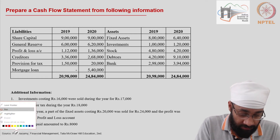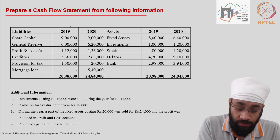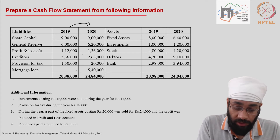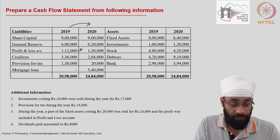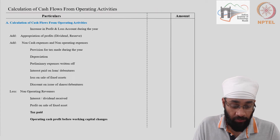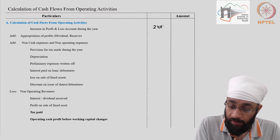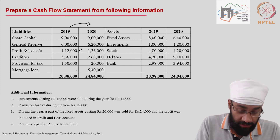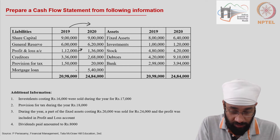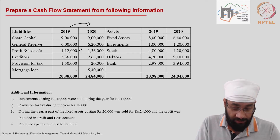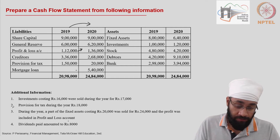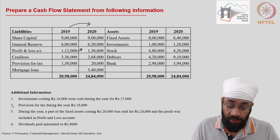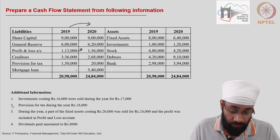Let's first look at the direction of change. From 2019 to 2020, looking from left to right, the profit and loss account is going up by 24,000. So this is the amount retained during the year — 24,000. Then I'm going to look at the adjustments. There is something related to investment, provision for tax, fixed assets, and dividends. So I'm just going to prepare my working notes to know all the hidden information and accordingly move forward.